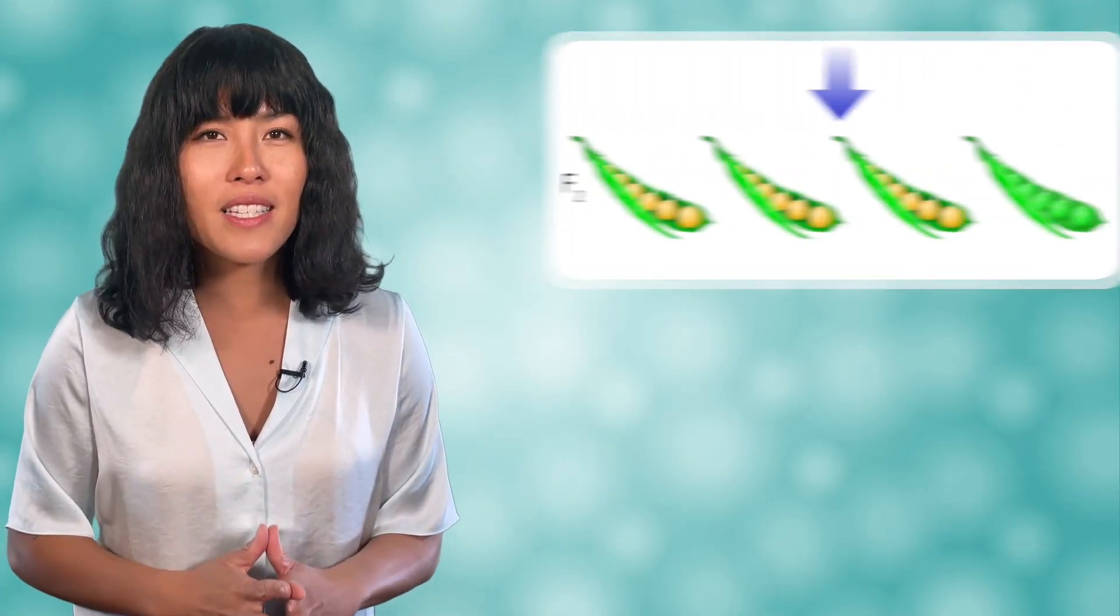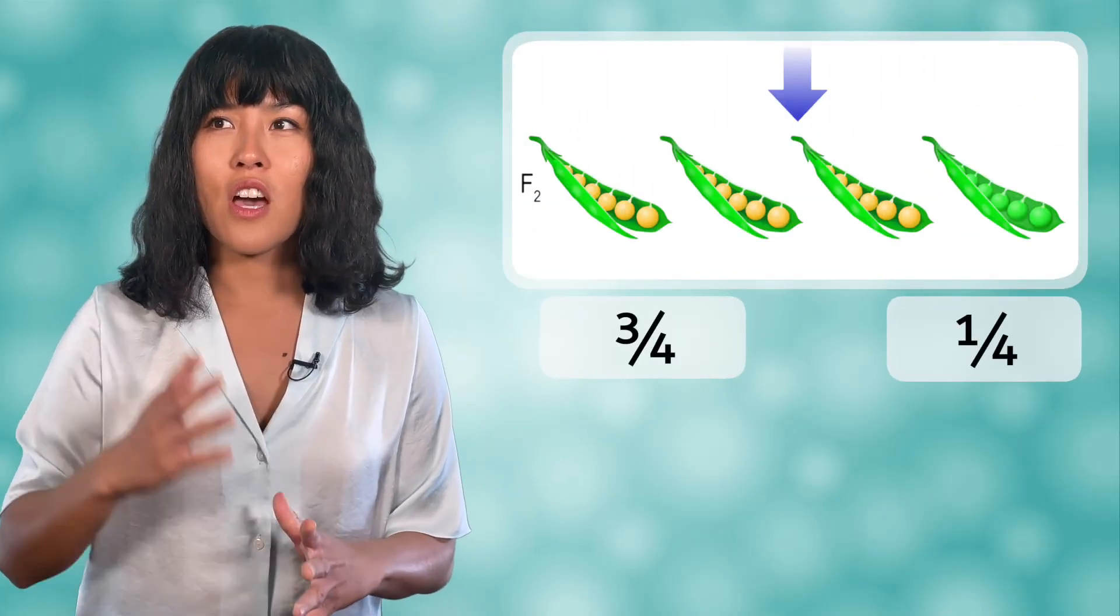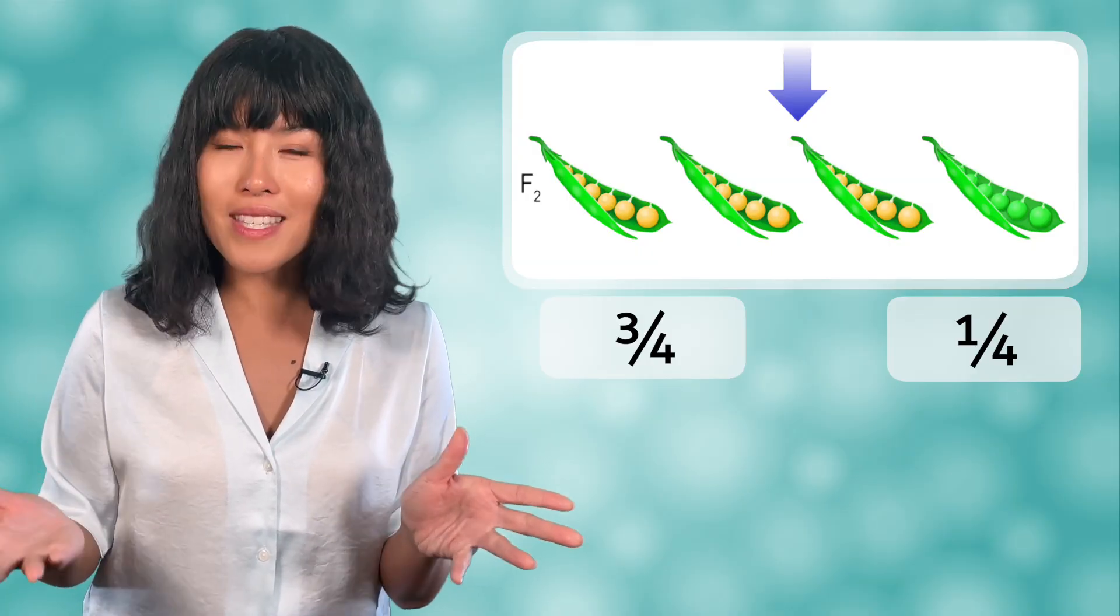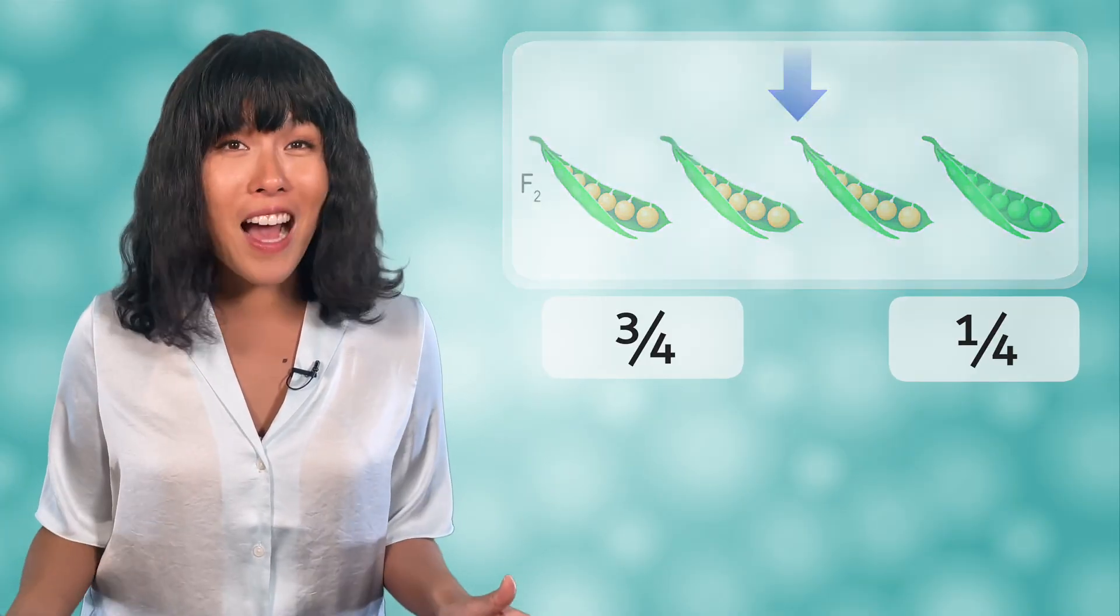We've only just started our journey through genetics. Something to think about before next time, why do the fractions three-fourths and one-fourth keep coming up? That can't be a coincidence, it happens every time. It turns out there's some math involved that we need to work out to answer that question. And we'll tackle that next time. Until then, remember that biology isn't just science, it's the way of life. See you next time.